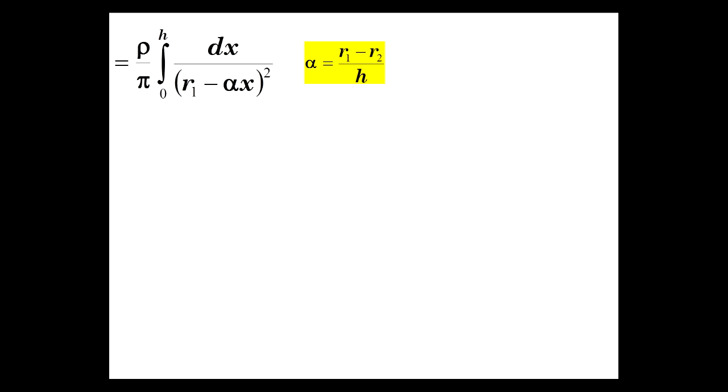I'm sorry, substitute for r1 and r2 and h. Call it alpha. So r1 minus alpha x squared.